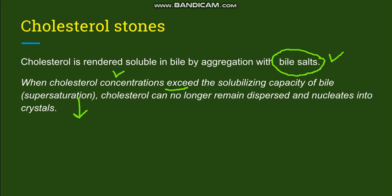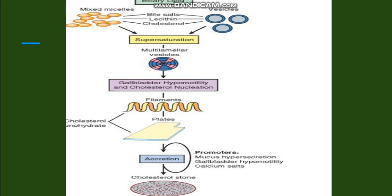Cholesterol is no longer dispersed in the bile and it nucleates into crystals. In detail, cholesterol is rendered soluble with the help of bile salts and lecithin, which help to form mixed micelles that are soluble in bile. However, when there is supersaturation due to increase in cholesterol, there is formation of multilaminar vesicles. When combined with gallbladder hypomotility and stasis, this promotes the formation of cholesterol stones.